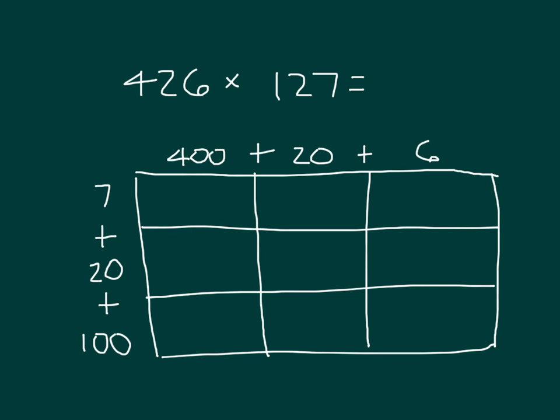We now just have to multiply some numbers together. 7 times 400, we have 7 times 4, which is 28, and we're talking about hundreds. 7 times 2 tens, that's 14 tens, which is also equal to 140. 7 times 6, which is 42.